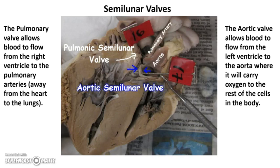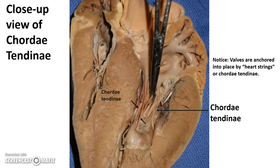The semilunar valves are at the top of the heart, between the aorta and the pulmonary arteries. The pulmonary valve allows blood to flow from the right ventricle up through the pulmonary arteries away from the heart. The aortic semilunar valve allows blood to flow from the left ventricle up to the aorta, where it will carry oxygen to the rest of the body's cells. The chordae tendinae — also called heartstrings — are fibers connecting the valves to the papillary muscles, which look smooth and shiny and feel hard and muscular in the lab.